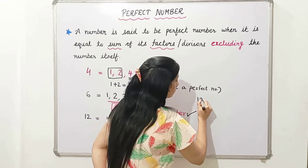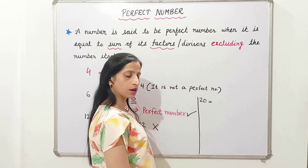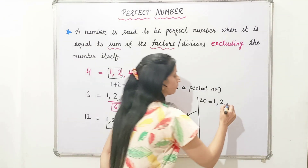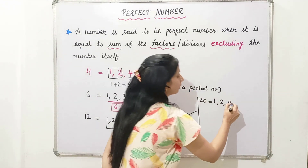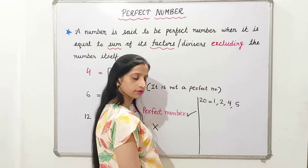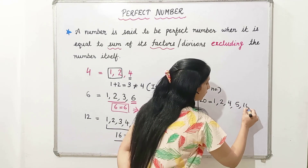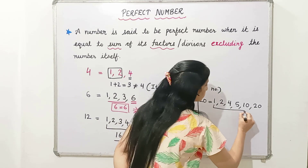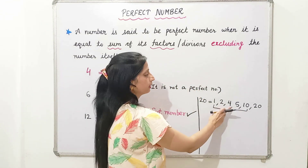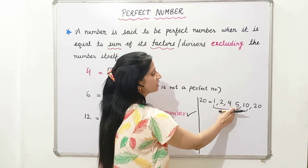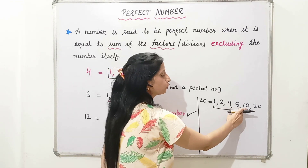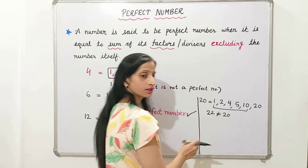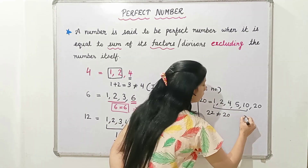Now let's take another number, 20. Let's write down its factors: 1, 2, 4, 5, 10, and 20. Now we add these excluding 20: 1 plus 2 is 3, plus 4 is 7, plus 5 is 12, plus 10 is 22. Which is not equal to 20. Hence 20 is not a perfect number.